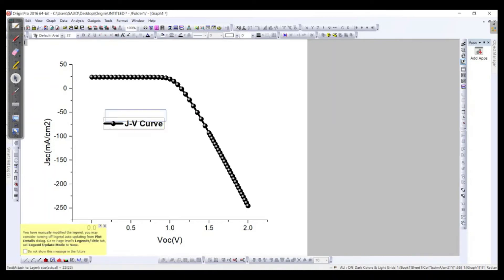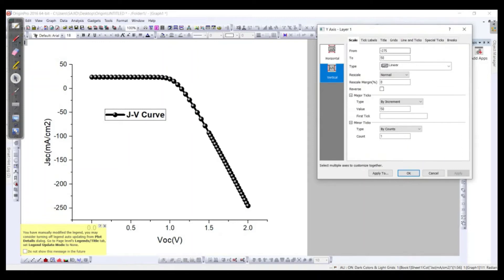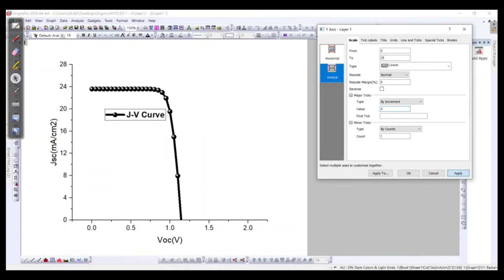So this is the J-V, then we can make the y-axis more realistic. So we can go to the scale from 0 to for example 28 milliampere per centimeter square and let's say the value of the gap value is 4, so we can apply it. The horizontal start from 0 to let's say 1.2 and the gap we would like to keep it 0.2, apply it.